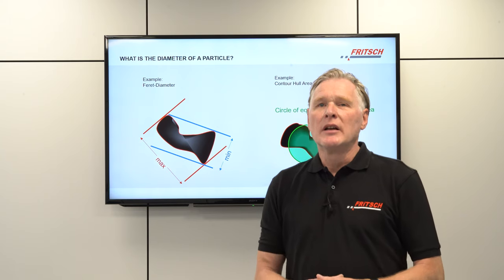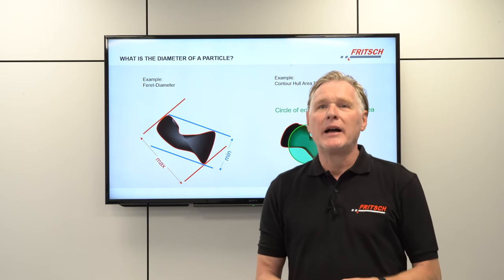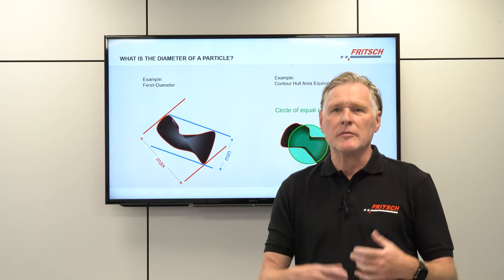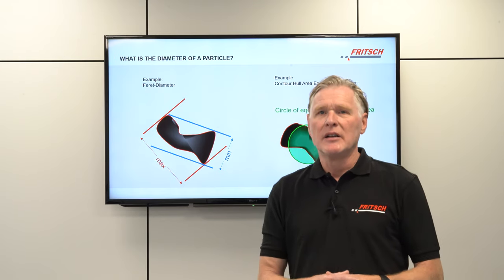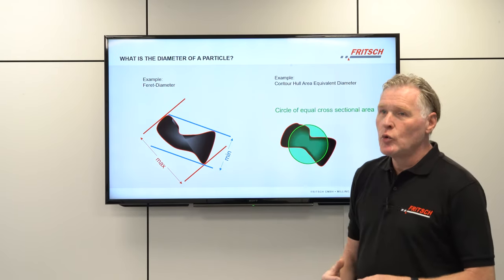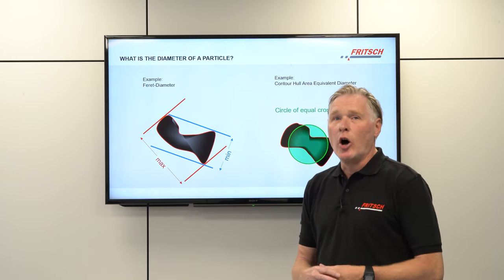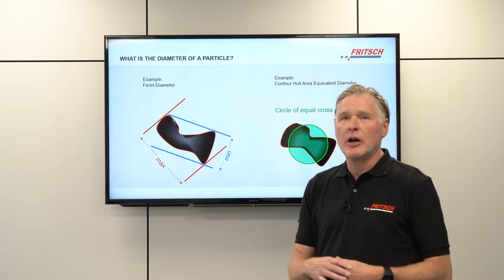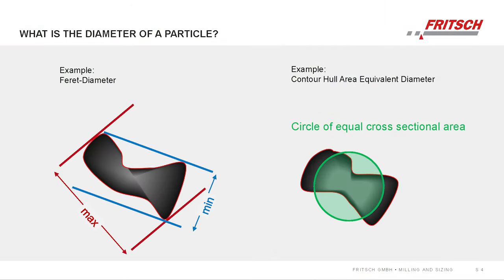Before we talk about how to measure the diameter of a particle, let's look at what the diameter of a particle actually means. Here we have two different definitions as examples for the diameter of an irregular shaped particle. On the left hand side you see the so-called Feret diameter, where two parallel lines touch the particle on opposite sides, and when you rotate the particle between those two lines you find the minimum and maximum Feret diameter.